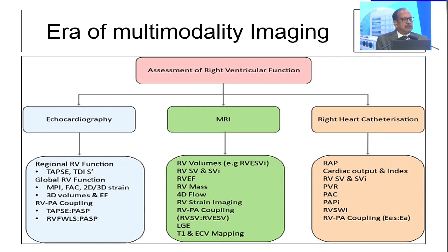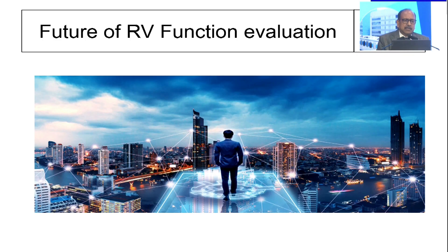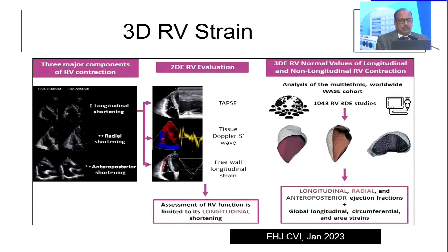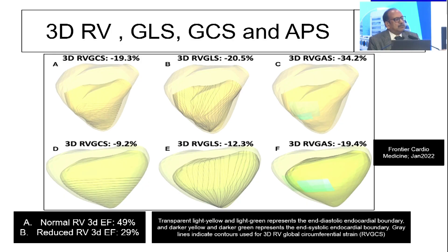So, colleagues, friends, and others — the era is of multimodality imaging: assessment of right ventricular function with echocardiography, MRI, and right heart catheterization. Echo is available everywhere, whether basic or advanced. MRI is available, and cath is truly an available modality. But what's the future? We are going to talk about three-dimensional RV strain in the time to come. We are only talking of longitudinal strain, but we also need to look at radial and anteroposterior strain of the RV, because these are another two strains which are equally important.